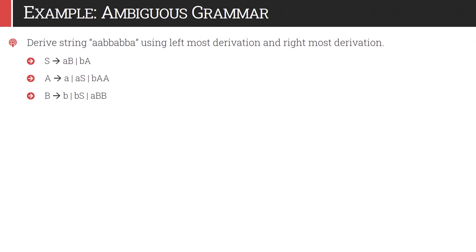Consider another scenario: derive the string aabbaabba using leftmost derivation and rightmost derivation, given the grammar. In leftmost derivation, whenever we have more than one non-terminal symbol in a sentential form, we always explore the leftmost symbol first. Starting with S derives small a capital B — LM indicates leftmost derivation — we replace capital B with aBb. In sentential forms with two capital B's, we always explore the leftmost non-terminal first, highlighted in red.